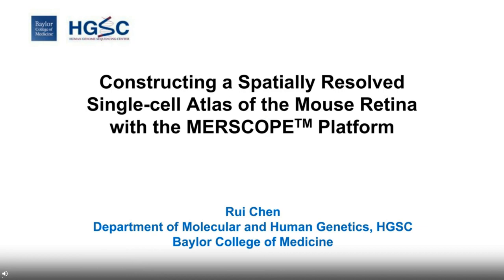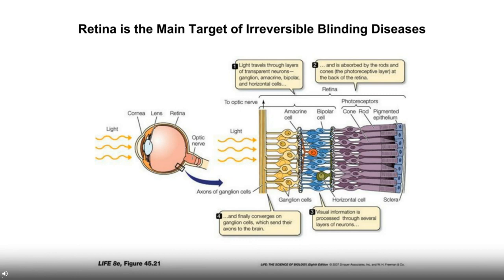I'd like to thank for the introduction, and I'm really happy to have the opportunity to share our experience with the MERSCOPE platform — using this wonderful technology to build a single-cell atlas of the mouse retina. Our lab is generally interested in the visual system, particularly the retina — the neural retina at the back of the eye — which is the part of the organ that captures light, converts it to electric signal, and transmits it to the brain.